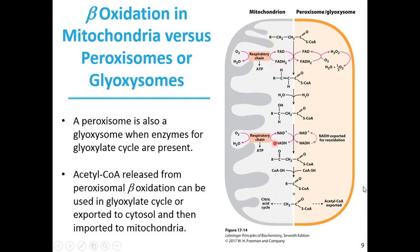On the left is a mitochondrion and on the right is a peroxisome. The electrons from FADH2 in the first enzyme step enter the respiratory chain in mitochondria, while in the peroxisome they are used to convert oxygen to hydrogen peroxide. This hydrogen peroxide is a strong and potentially damaging oxidant and is immediately cleaved to water and oxygen by catalase. In mitochondria, the first oxidation step is accompanied by ATP synthesis, whereas in peroxisomes the energy is not conserved as ATP but dissipated as heat.